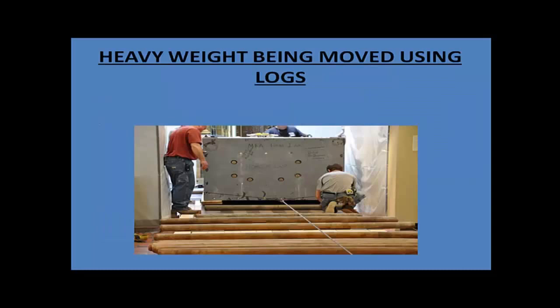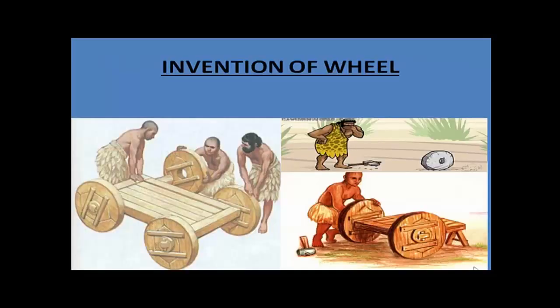You may also have seen that when people need to move heavy weights, they do not push or pull directly. Instead, they place the heavy weight onto large cylindrical wooden or metal logs, because such heavy weights move very easily over these logs. Now that we understand sliding and rolling friction, we can appreciate why the invention of the wheel was considered the most important invention in the history of mankind.